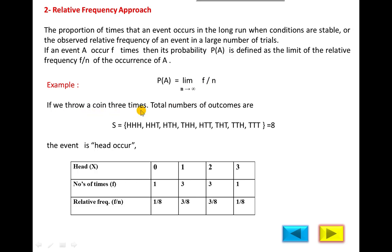For example, if you throw a coin three times, the total number of outcomes are eight. The event is the number of heads that occur. The possible values are: zero heads, one head, two heads, or three heads. Zero heads occur one time, one head occurs three times, two heads occur three times, and three heads occur one time.